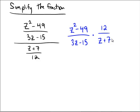So in the numerator, we have z squared minus 49, and that's a difference of squares. So that's going to factor into z plus 7, z minus 7, and in the bottom there's a GCF we can pull out. Pull out that 3, and we have a z minus 5.